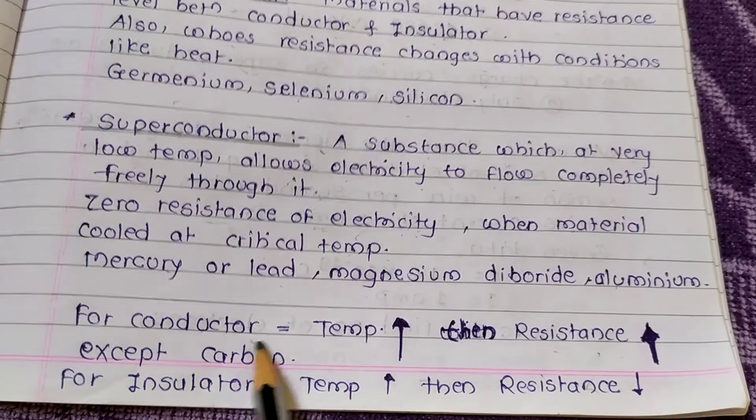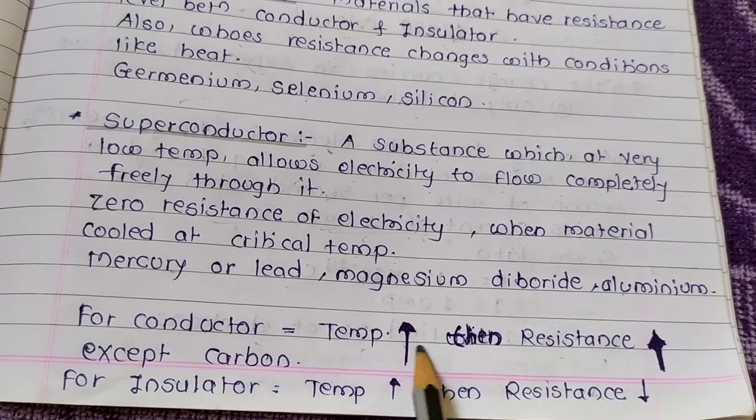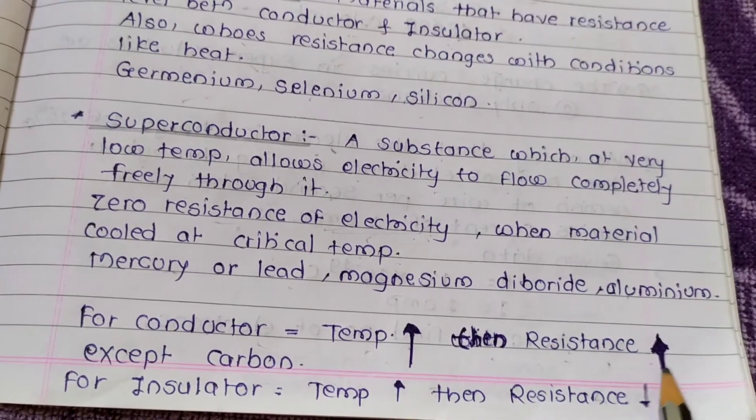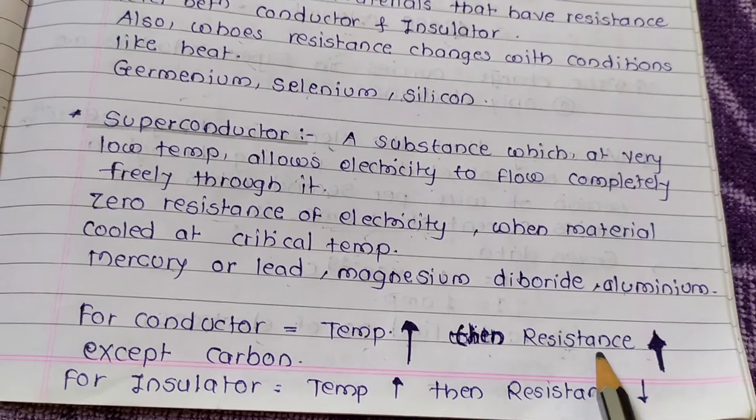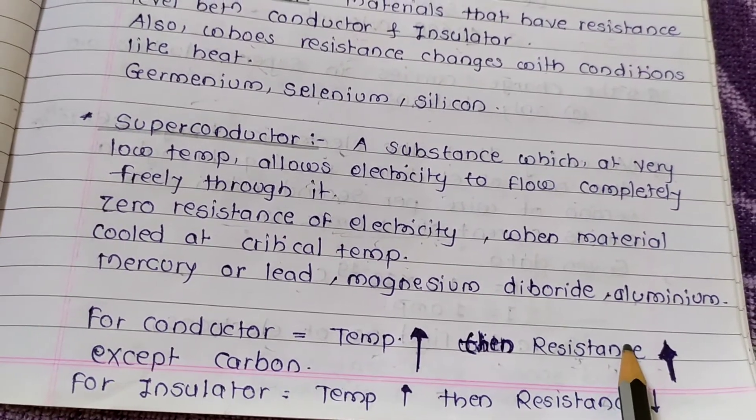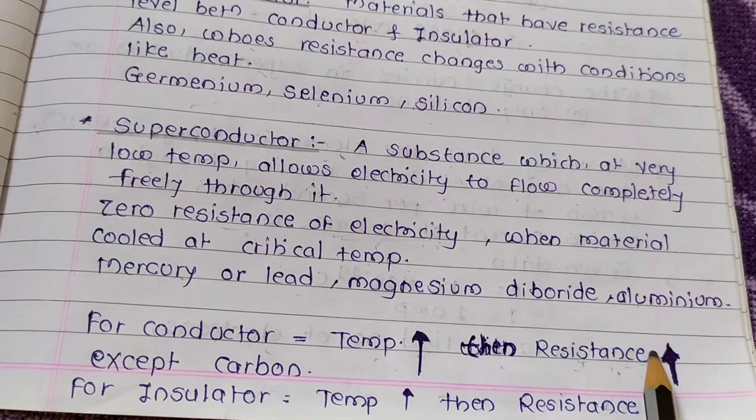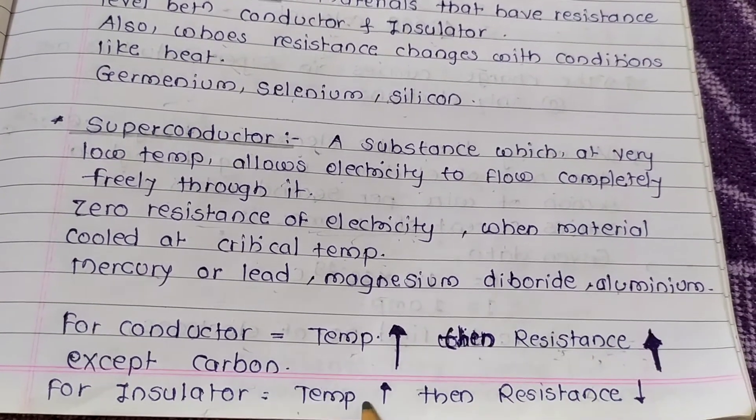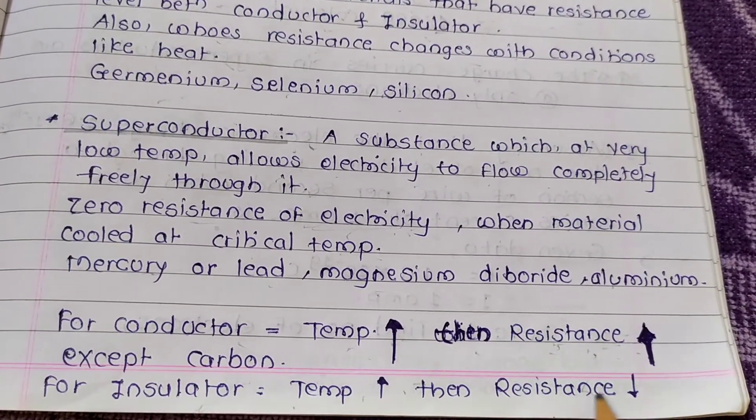For conductor, when temperature increase then resistance also increase. Resistance means opposition to current also increase. For insulator, temperature increase then resistance decrease.